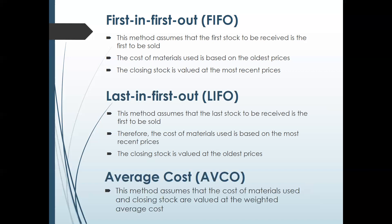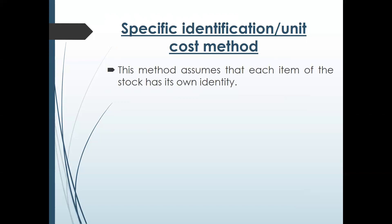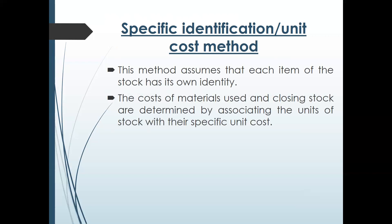Weighted Average: This method assumes that the cost of material used and closing stock are valued at the weighted average cost. Specific Identification Unit Cost Method: This method assumes that each item of stock has its own identity. Har item ki apni identification hai. The cost of material used and closing stock are determined by associating the units with their specific unit cost.